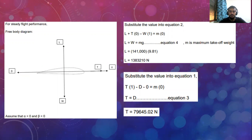For steady flight, this is the free body diagram. We assume that the angles are zero, alpha and beta are zero. We substitute the values into the equation and we derive the values of lift and thrust.